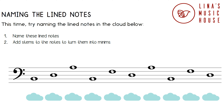Now let's name some line notes. The suggested rule for bass line notes is Good Birds Don't Fly Away. The first note is on the second line. The second word is Birds, so this is a B note. The next note is on the third line. The third word is Don't, so this is a D note.